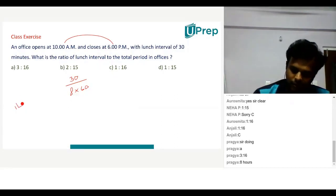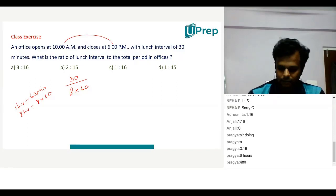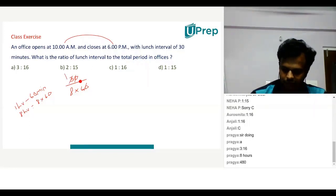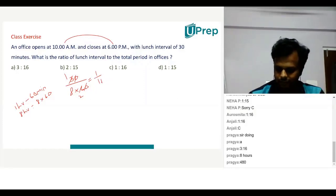Now one hour is 60 minutes, so eight hours will be 8 into 60. So 30 by 8 into 60 will be, if I cut this, that will be 1 by 16. 1 by 16 is nothing but 1 is to 16. Is that clear, Pragya?